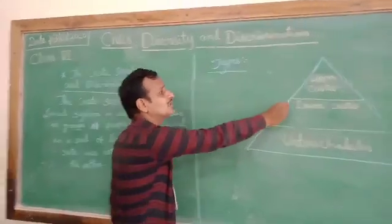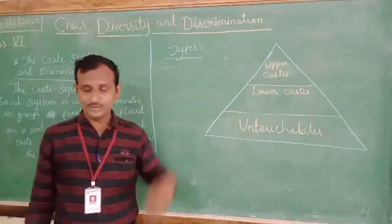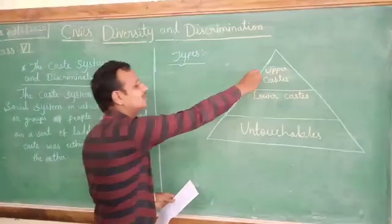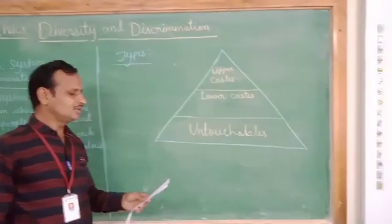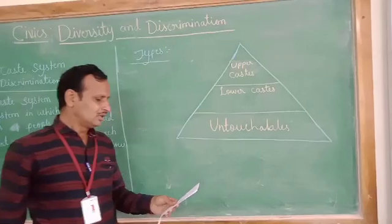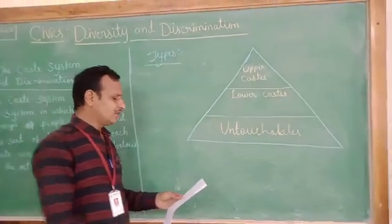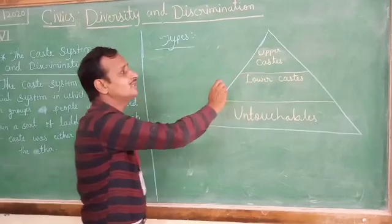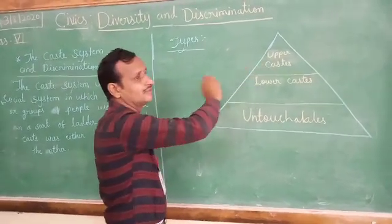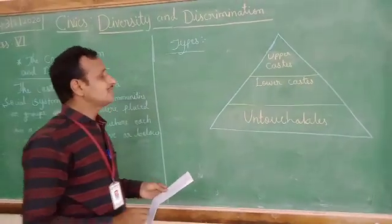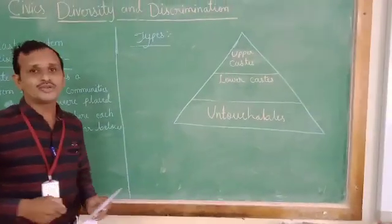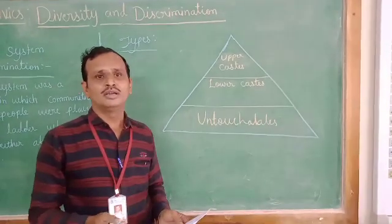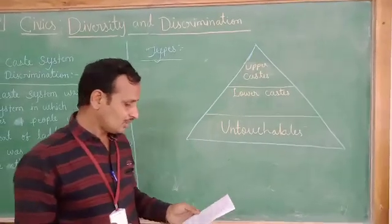Who are upper caste people? The castes are mainly divided into three groups: upper caste, lower caste, and untouchable. The section of the people who are placed at the top of the ladder — the top of the ranking order — are called the upper caste people. For example, Brahmins and Kshatriyas are the best examples of upper caste people.